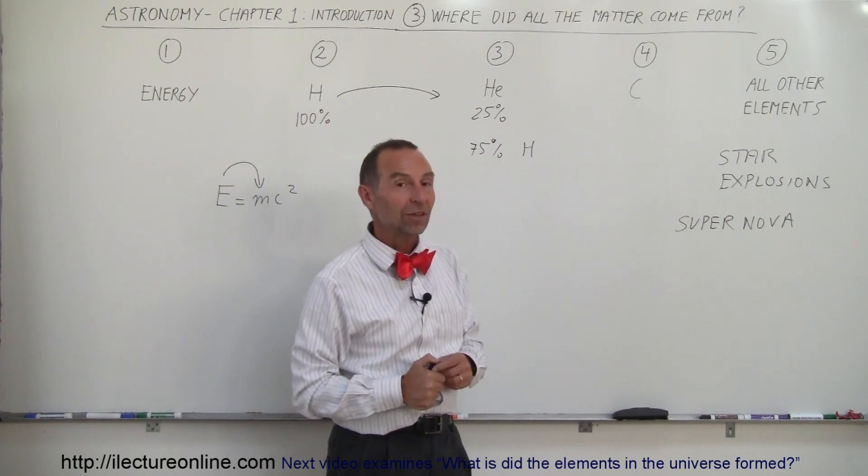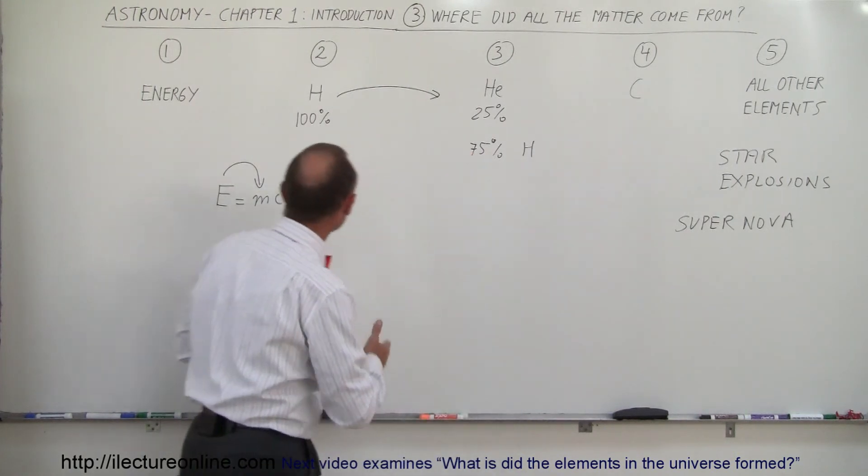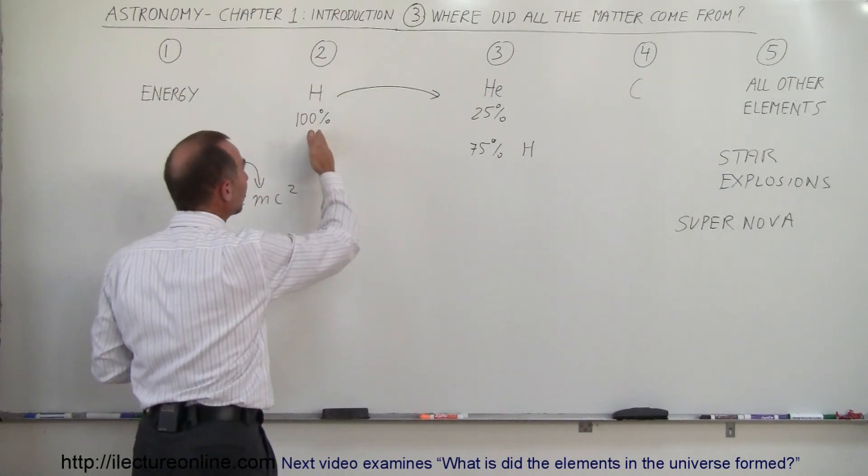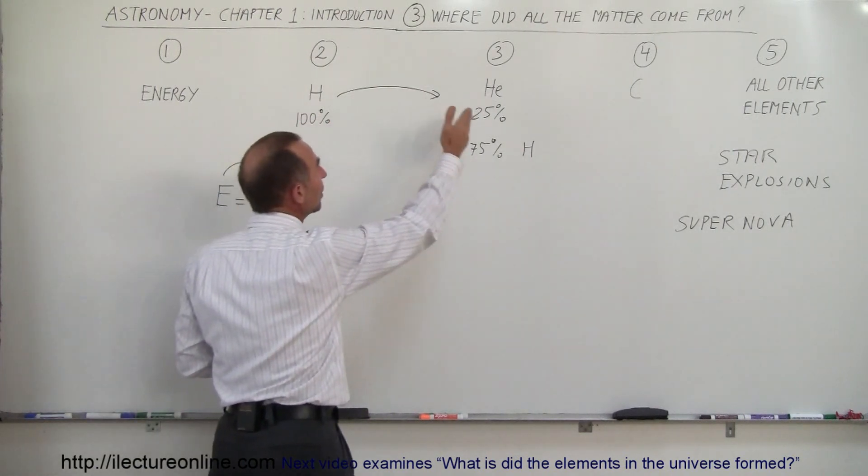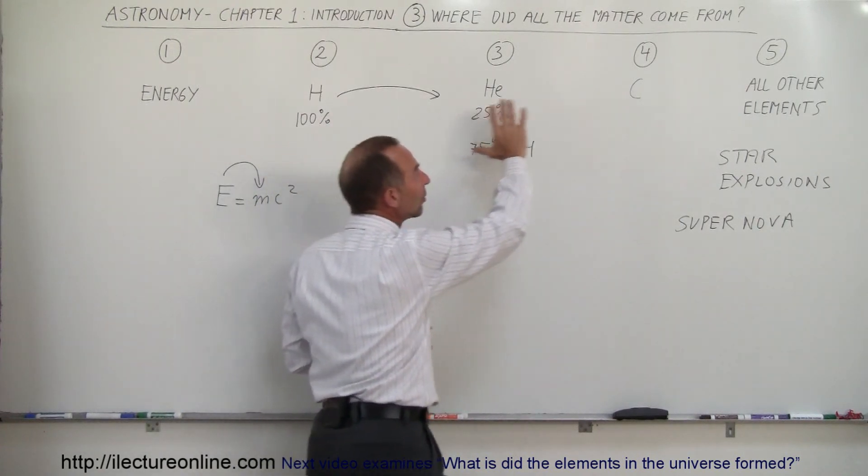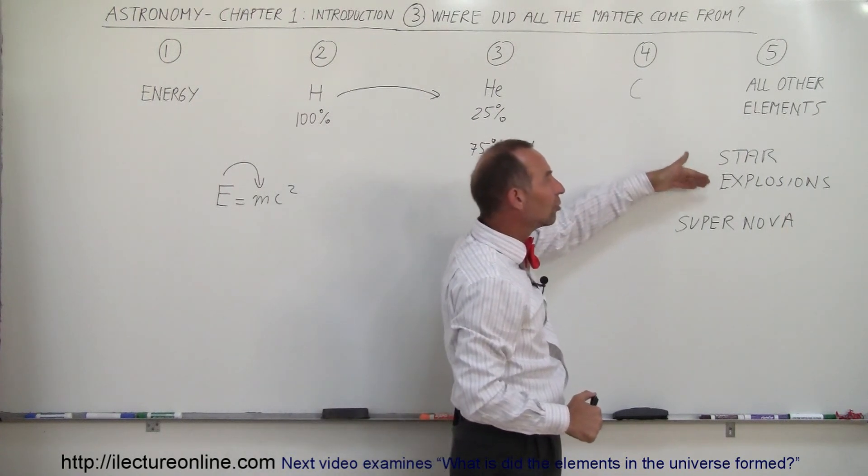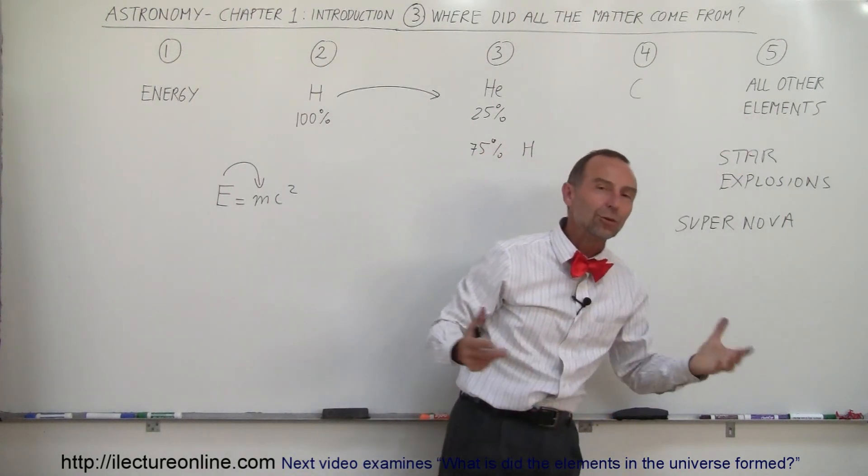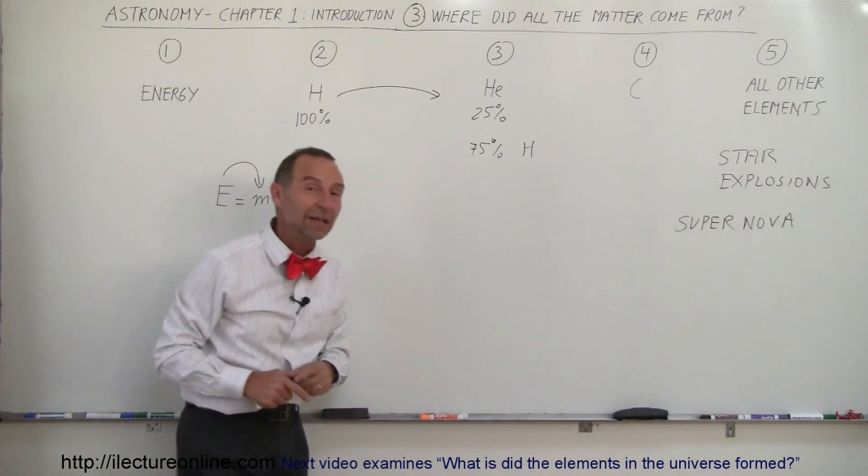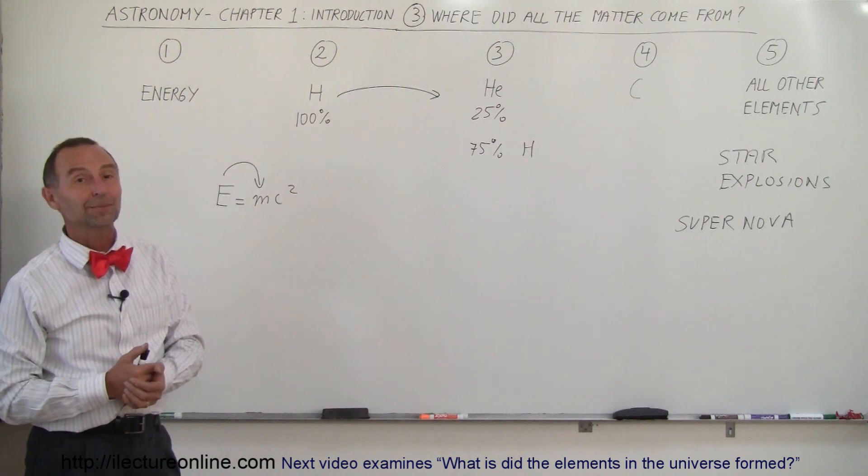It's quite an amazing process. And yes, that's where matter came from. Matter initially came from energy. Energy created hydrogen. Hydrogen, through the process of the universe, created helium. Then the helium was then used by stars to create carbon. And then by the very large stars, all the other elements were then created through those supernova explosions. An amazing story, amazing reason for our existence here. That's where all the matter comes from. Thank you.